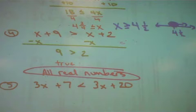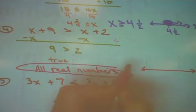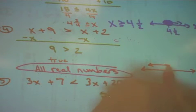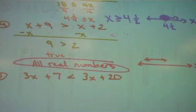So if we were to graph this, here's my number line, here's x, and it's an arrow going both directions showing that every single number in our system solves this and makes it true.